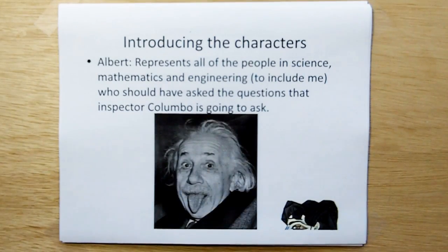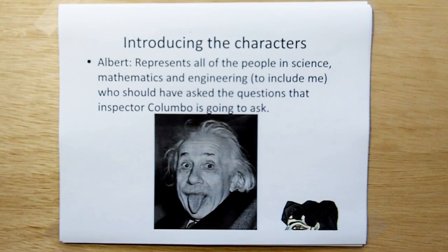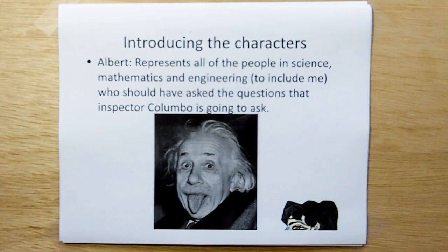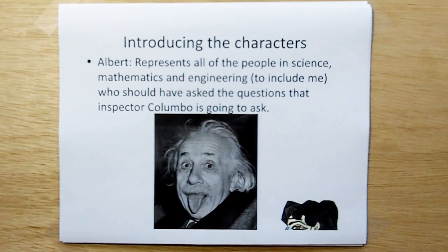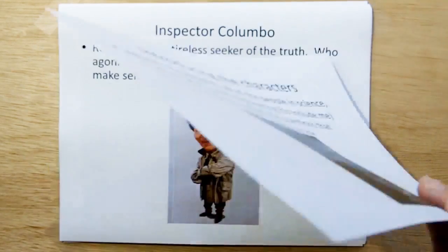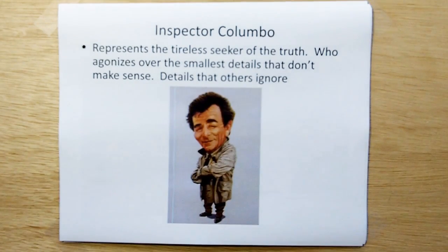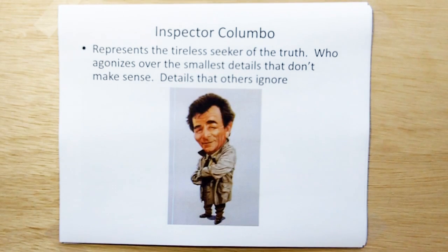So let's introduce the characters for today's teleplay. We're going to be using Albert Einstein — we're not making fun of him, we're just using him to represent all the people in science, mathematics, engineering, to include me. I should have asked these questions 20 or 30 years ago. I should have figured out that there was something wrong. And we're going to use Inspector Columbo to represent the tireless seeker of the truth, a person who agonizes over the smallest details that don't make sense, details that keep him awake at night, that other people just wantonly ignore.